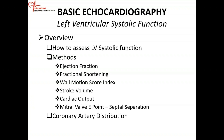In order to do wall motion and wall motion score index, we have to divide the heart walls into different segments — that's key. Stroke volume is the volume of blood pumped out from the left ventricle per beat: end-diastolic volume minus end-systolic volume.